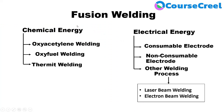Fusion welding is classified on the basis of chemical energy and electrical energy. Using chemical energy, it is performed by oxyacetylene welding, oxyfuel welding, and thermite welding. Using electrical energy, it is performed by consumable electrode welding, non-consumable electrode welding, and other processes such as laser beam welding and electron beam welding.